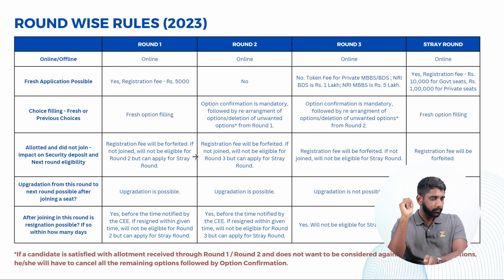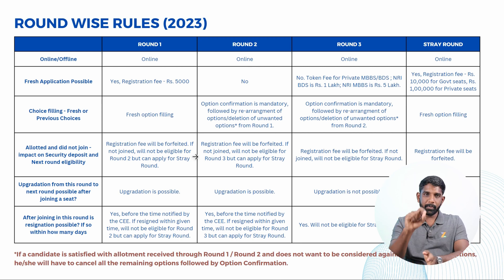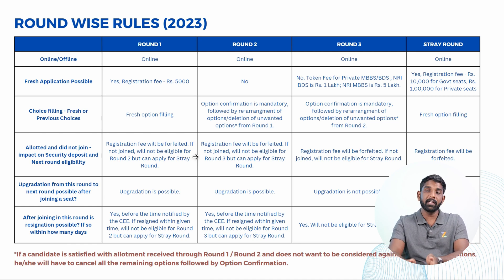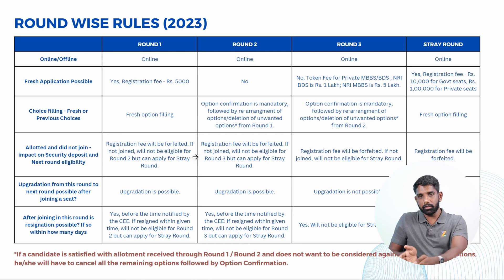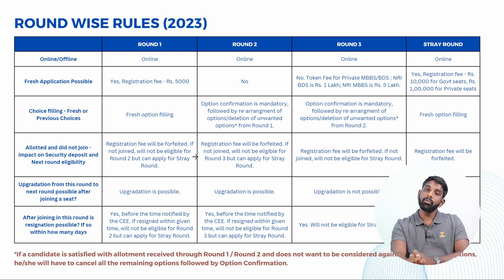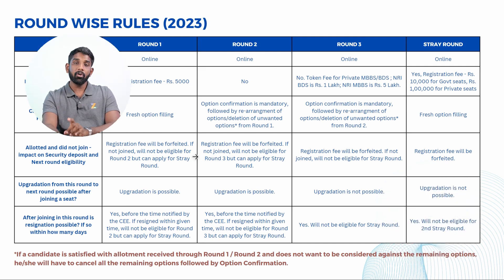One thing to note: in Round Two and Round Three, option confirmation is mandatory. If you don't do the option confirmation, you will not be considered for that round. If a candidate gets a seat in Round One and in Round Two doesn't want any of the remaining options, they can remove those options during option confirmation. If a candidate is satisfied with the allotment received in Round One or Round Two and doesn't want to be considered for remaining options, they must cancel all remaining options followed by option confirmation.